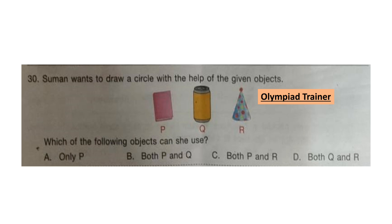Question 30. Suman wants to draw a circle with the help of the given objects. Which of the following objects can she use? The correct answer is option D: both Q and R.